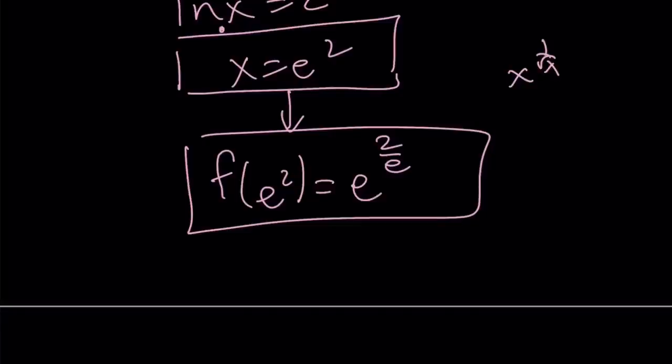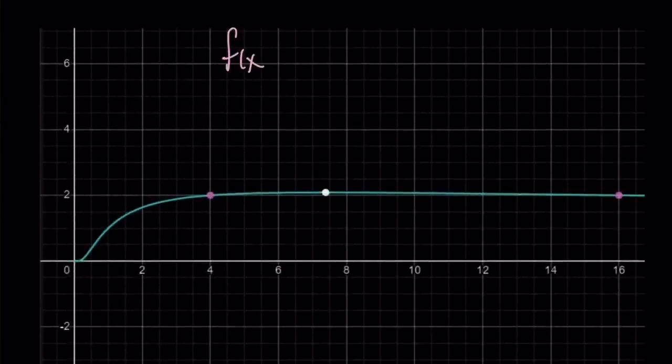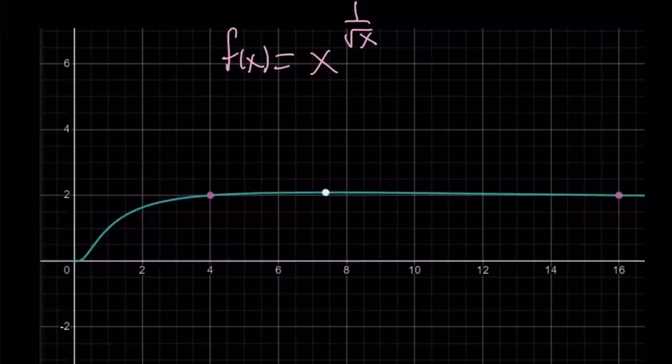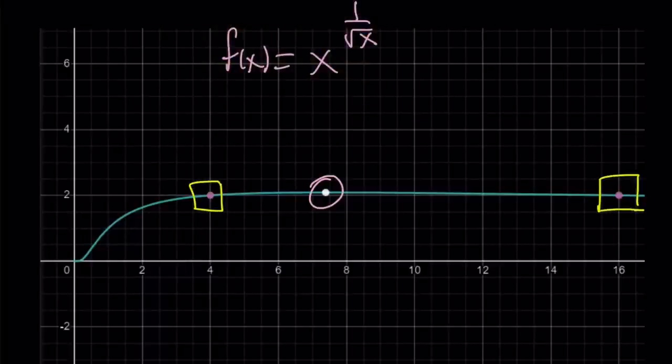Here's the graph of f of x equals x to the power of 1 over square root of x. This is where the graph has a maximum. We've got two more points, and those are actually the intersection points with the horizontal line y equals 2. We have a solution at x equals 4 and x equals 16, and this is a curve that is concave down, and there's only two solutions. So the solution set is 4 and 16.